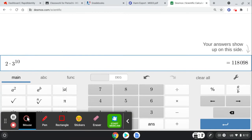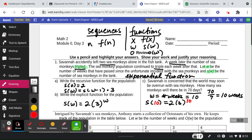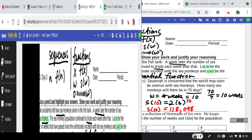So I'm looking at 118,098 sea monkeys. This is the two times three to the power of 10. So 118,098. So after 10 weeks, there would be 118,098.